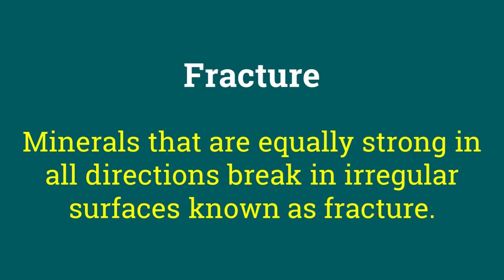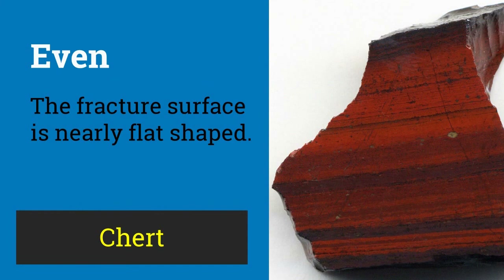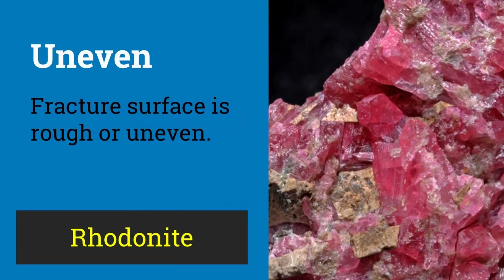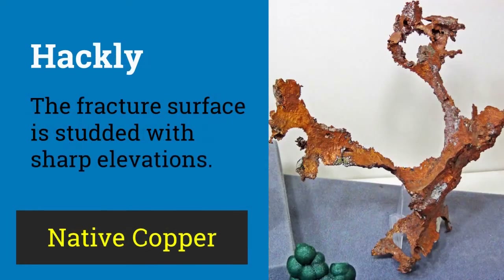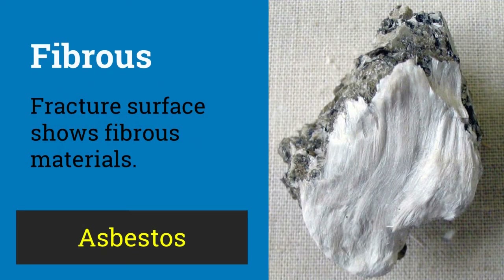Though it is unwise to break good crystals, freshly fractured minerals can sometimes reveal the true color of certain minerals. There are six types of fractures: even, uneven, hackly, splintery, fibrous, and conchoidal. Flint shown here shows even fracture as the fracture surface is nearly flat. But when the fracture surface is rough or irregular, like in rhodonite shown here, the fracture is called uneven. Mineral surfaces studded with sharp elevations along the fracture surface are said to have hackly fracture, as shown by native copper. Minerals like kyanite break into pieces having sharp corners and edges; such fracture surfaces are called splintery, and are also formed in pectolite. Minerals composed of fibrous aggregates also break along a fibrous fracture surface, as asbestos shows fibrous fracture.